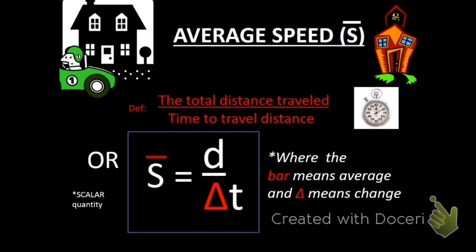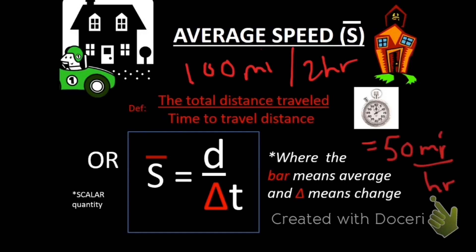Average speed is also a scalar quantity. So let's say I travel 100 miles in two hours. My average speed would be 50 miles per hour. Now, this is only an average, my total distance divided by my total time. If you picture a car trip, you're probably not traveling 50 miles per hour the entire time. There's points where you're going slower, but then there's also points where you're going faster.